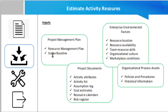The scope baseline identifies the project and product scope necessary to meet the project objectives. The scope drives the needs for both team and physical resources. Then project documents, which includes activity attributes — activity attributes provide the primary data source for use in estimating team and physical resources required for each activity on the activity list.